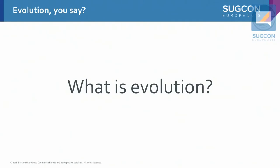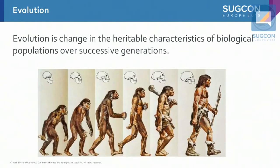What is evolution, and why am I talking about it? Well, for one, it's been a hot topic recently — and by recently, I mean the last three billion years. I think it's a pretty good metaphor, both for gradual and for radical changes in software products. Evolution is change in the heritable characteristics of biological populations over successive generations. That's the biological side of it, but this metaphor can be applied to software as well.